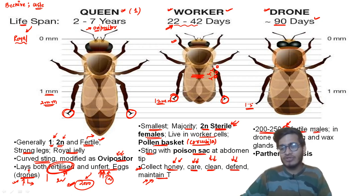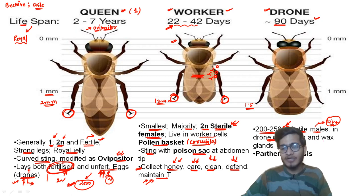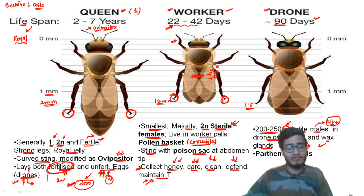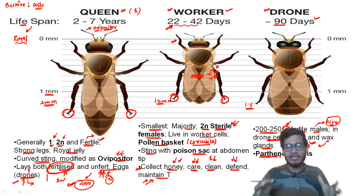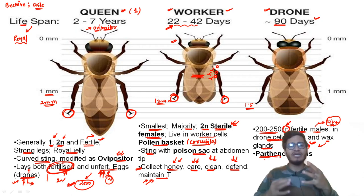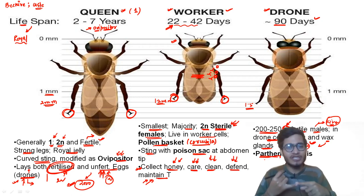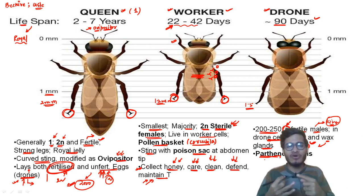Drones are fertile males and since there is only one type of male in the beehive, they are called the king of the beehive. They live in drone cells. At their sting, a wax gland is present — this is where bee wax is produced. Bee wax is even more costly than honey. It is produced by the drones and is made through the parthenogenesis process from unfertilized eggs.